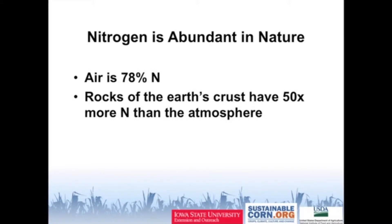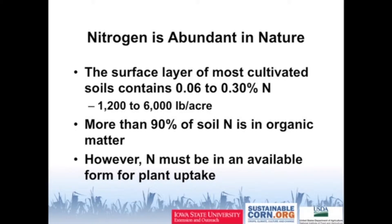Nitrogen is very abundant in nature. There's about 78% nitrogen — N2 gas being the predominant form in the atmosphere — and rocks of the earth's crust have 50 times more nitrogen than in the atmosphere. So on the land side, there is a very large resource of nitrogen. Soils range considerably in their nitrogen content, from about 0.06 to 0.3% nitrogen, and on a pound per acre basis, maybe something like 1,200 to 6,000 pounds per acre.